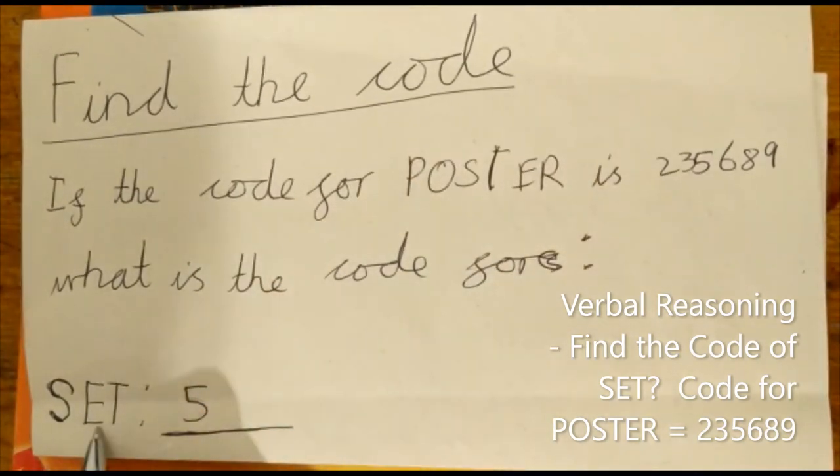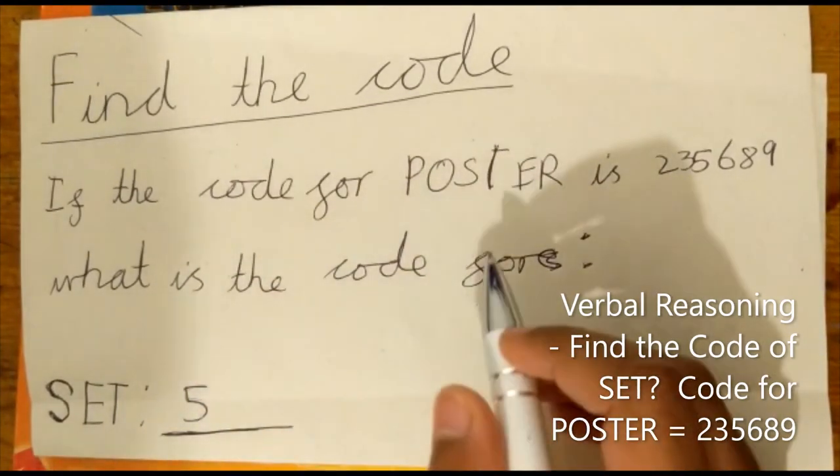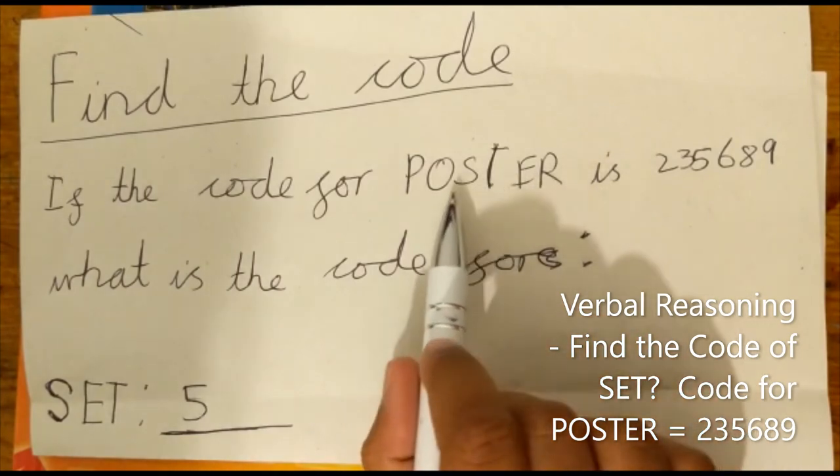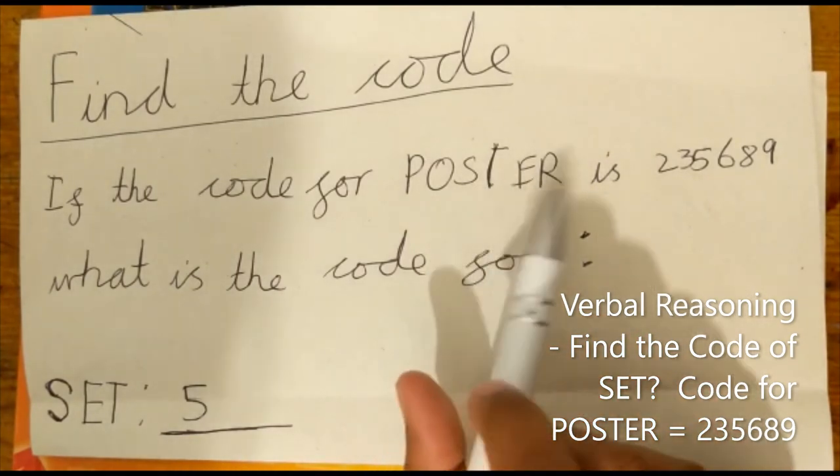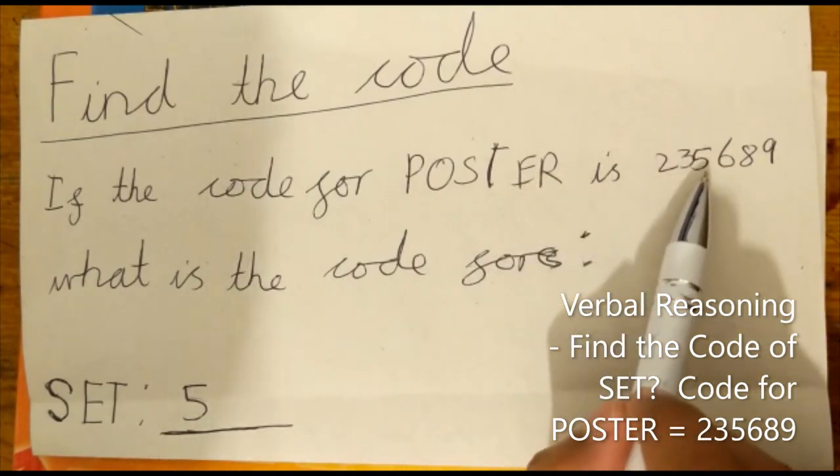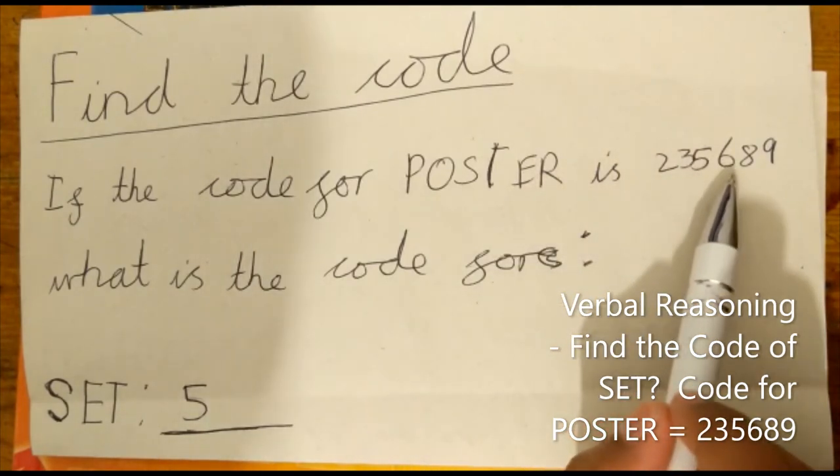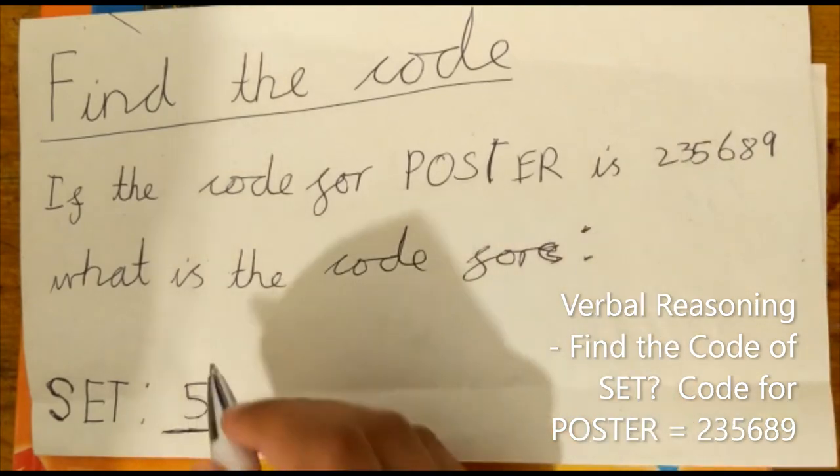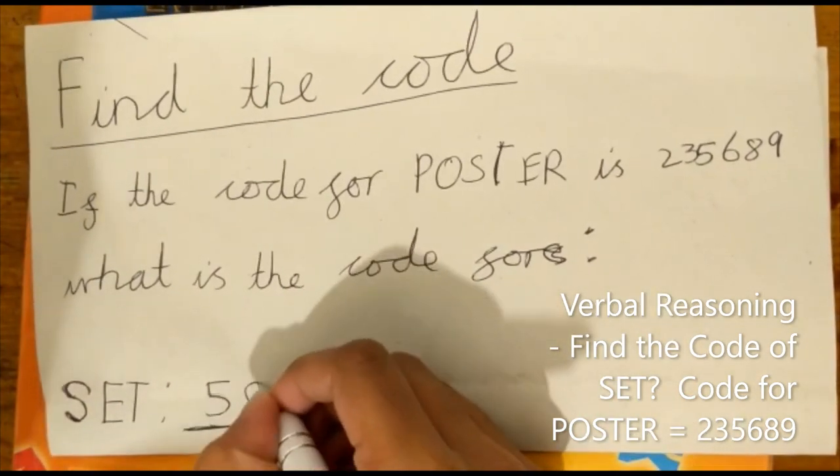The next letter in set is E. We need to find E in poster. In poster, E is the fifth letter, so we need to find the fifth number in the code. And the fifth number is 8, so 8 will be the next number for the code.